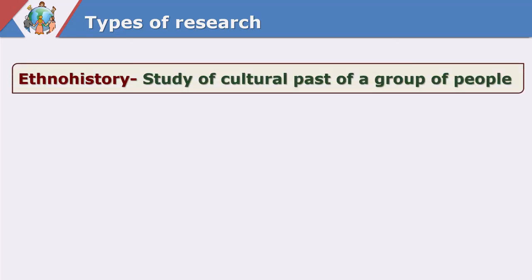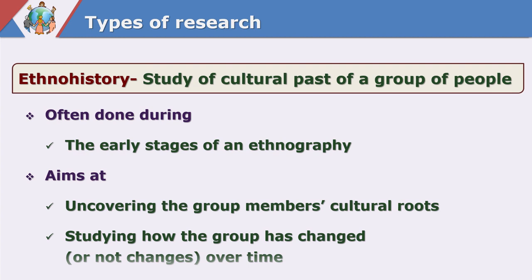Ethno history is the study of the cultural past of a group of people. This is often done during the early stages of an ethnography. Ethno history aims at uncovering the group members' cultural roots and studying how the group has changed or not changed over time. If we are focusing on one group and want to know from where they have evolved — if we enter into the history and past of that particular culture to find its roots — then we are talking about ethno history.